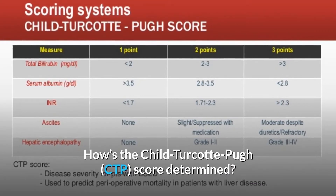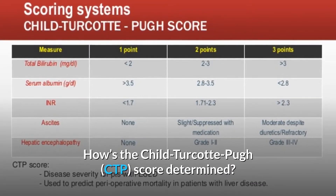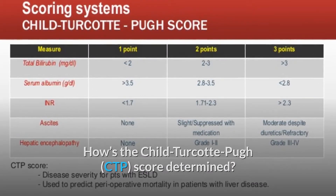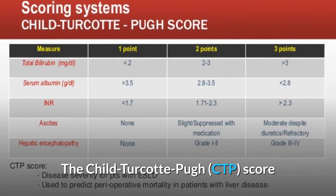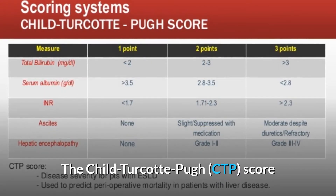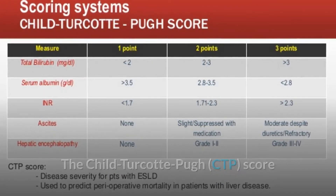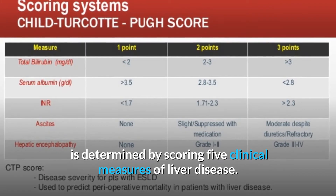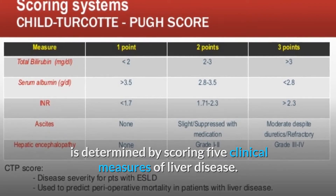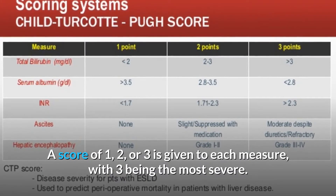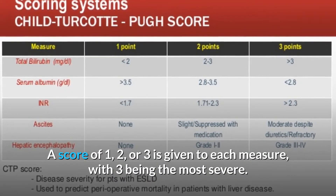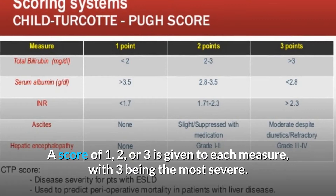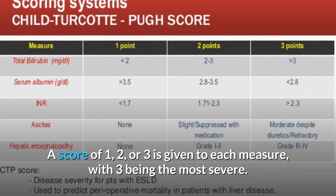How is the Child Turcotte-Pugh (CTP) score determined? The CTP score is determined by scoring five clinical measures of liver disease. A score of one, two, or three is given to each measure, with three being the most severe.